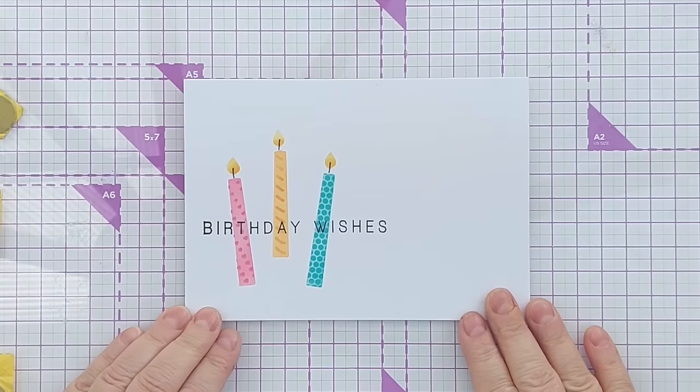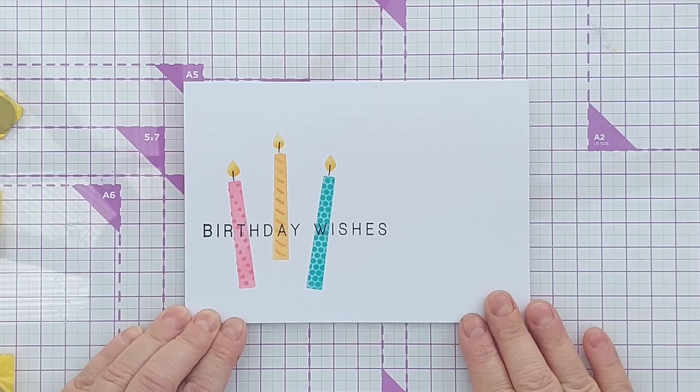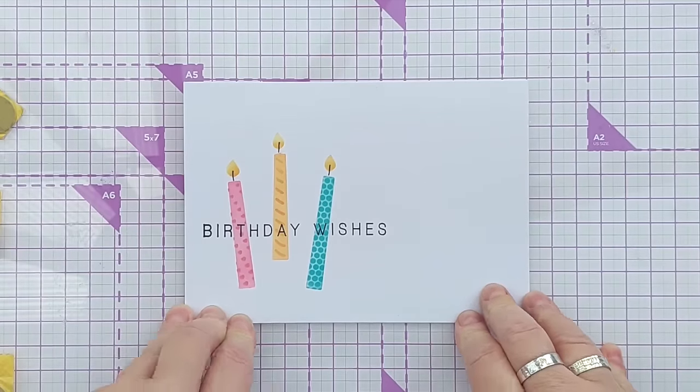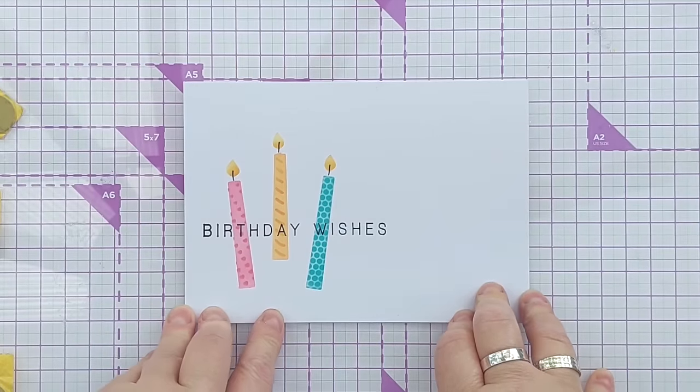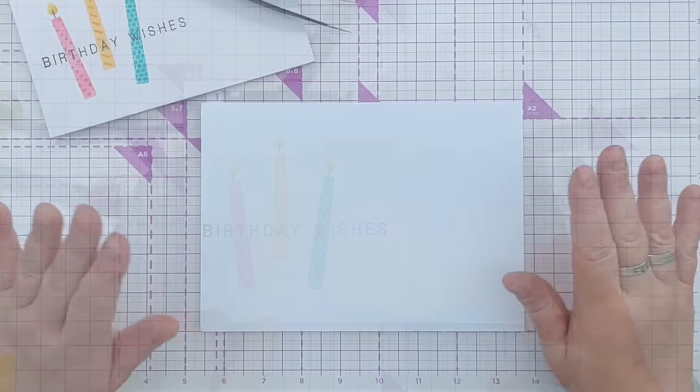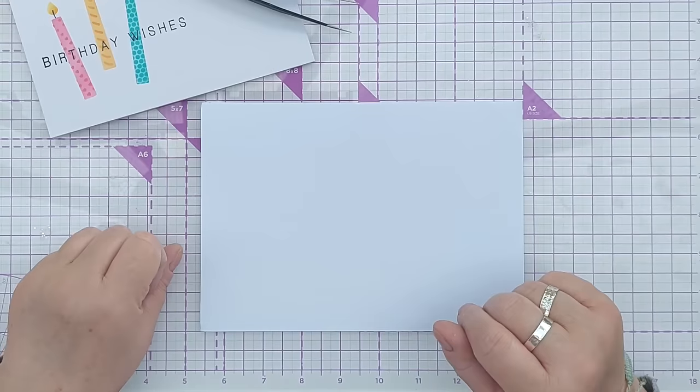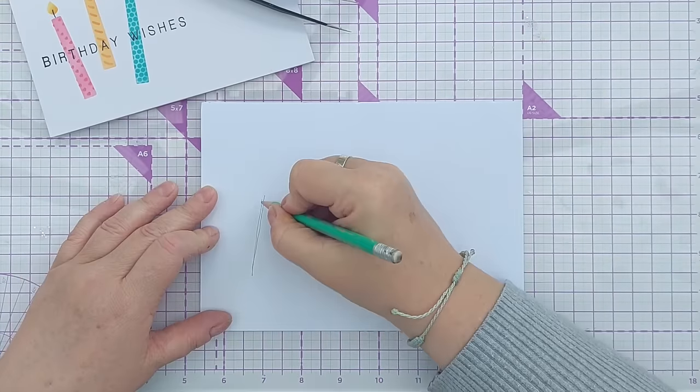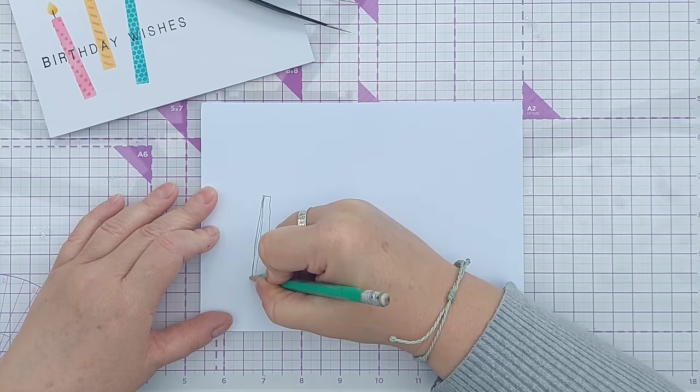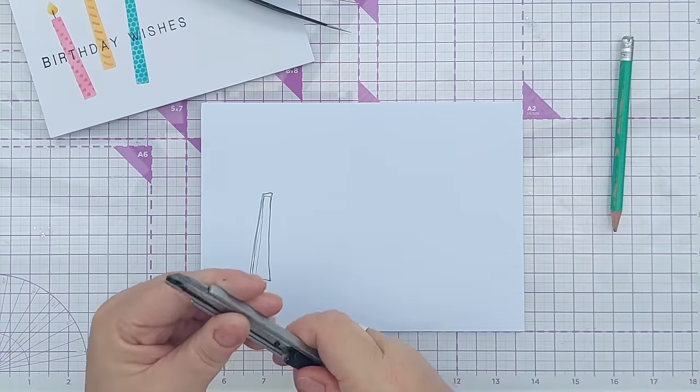So there we have a clean and simple birthday wishes card made with a stencil created with dies and stencils I've already got in my stash, so no need to go out and buy another stencil set. But what if you haven't got any candle dies? Well, it's a very simple shape, so you could make your own. Draw out whatever shape you want. It doesn't have to be neat or tidy, just an approximate size and shape, and then take a craft knife.